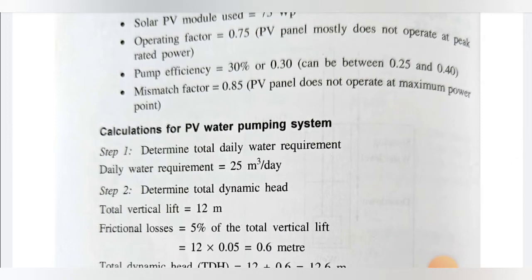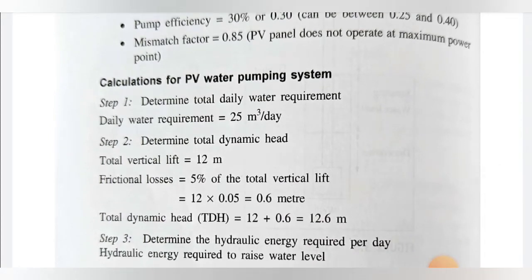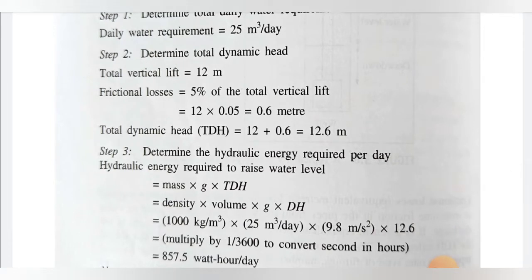Step 1: The total daily water requirement is 25 cubic meters per day. Step 2: Determining the Total Dynamic Head (TDH) — TDH equals vertical lift plus frictional losses. Vertical lift is 12 meters, and frictional losses are 5% of vertical lift: 0.05 × 12 = 0.6 meters. Therefore, TDH = 12 + 0.6 = 12.6 meters.